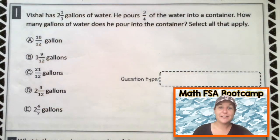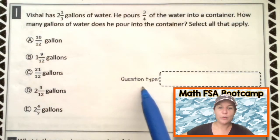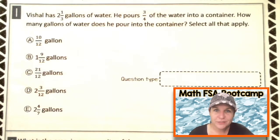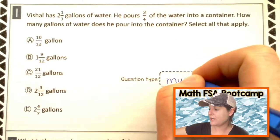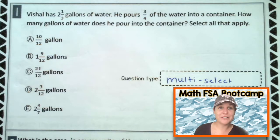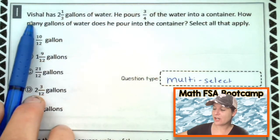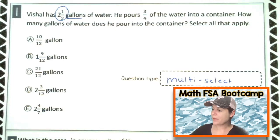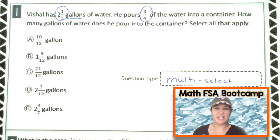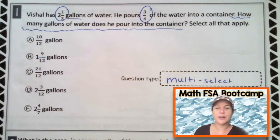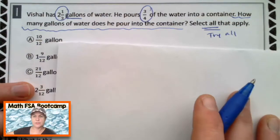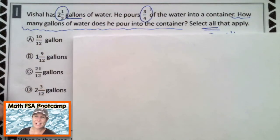Welcome back, everybody. Let's go ahead and take a look at number one. So right away, I'm going to identify the question type. I'm seeing five answer choices. So this is probably going to be what kind of question? Yeah, a multi-select. So jot that down if you did not already. Alright, now that we have that, let's go ahead and read and break down the text. This says, Vaishal has two and one-third gallons of water. He pours three-fourths of the water into a container. How many gallons of water does he pour into the container? Select all that apply. So to do this, I'm going to get a piece of paper because when in doubt, I always draw it out.